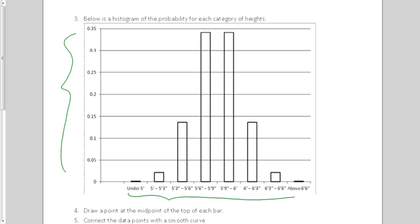It says draw a point at the midpoint of the top of each bar. So right here in the middle of each bar, I'm going to put a midpoint. And then it says connect the data points with a smooth curve. Well, I'd start out kind of flat here, and then I'd be going up. If I'm going to be a smooth curve, I have to go up a little bit higher before I start coming down. And there we go.